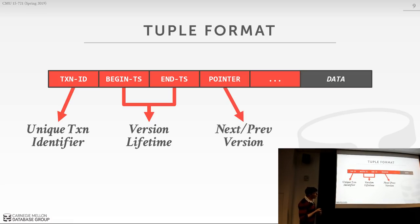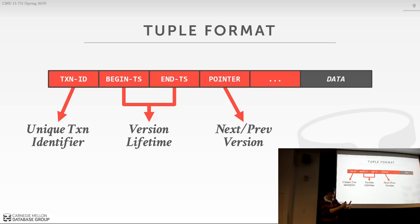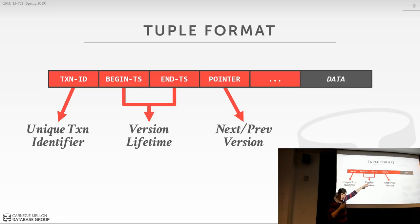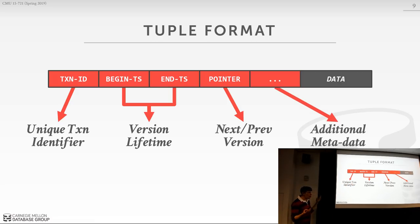We'll have a pointer that points to either the next or previous tuple in the version chain for a single logical tuple. For every logical tuple, we can have multiple physical versions, and we use this 64-bit pointer field to traverse the chain. This will be a singly linked list — not doubly linked — because in order to efficiently make modifications to the linked list, we want one 64-bit field so we can do compare-and-swap on it. There's also additional metadata depending on the protocol.